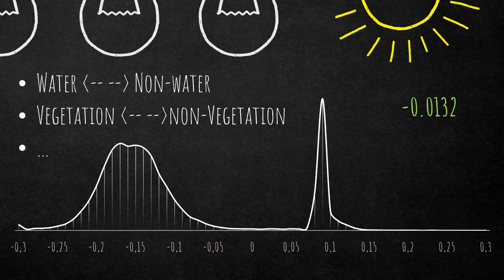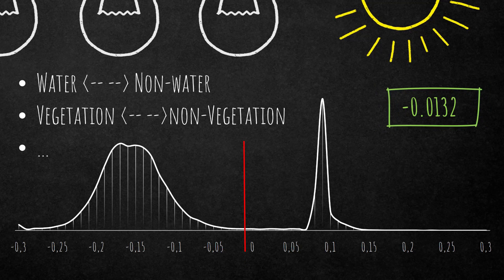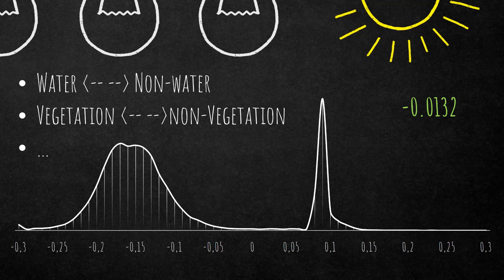The value range is based on an index which ranges between minus one and plus one, and the algorithm finds the best separation between bright and dark. In this case the output was minus 0.0132 — that threshold position is shown here. You can then split the image based on that threshold. It works very nicely if you have two features like water/non-water or vegetation/non-vegetation that are nicely separable and show a clear contrast between each other.